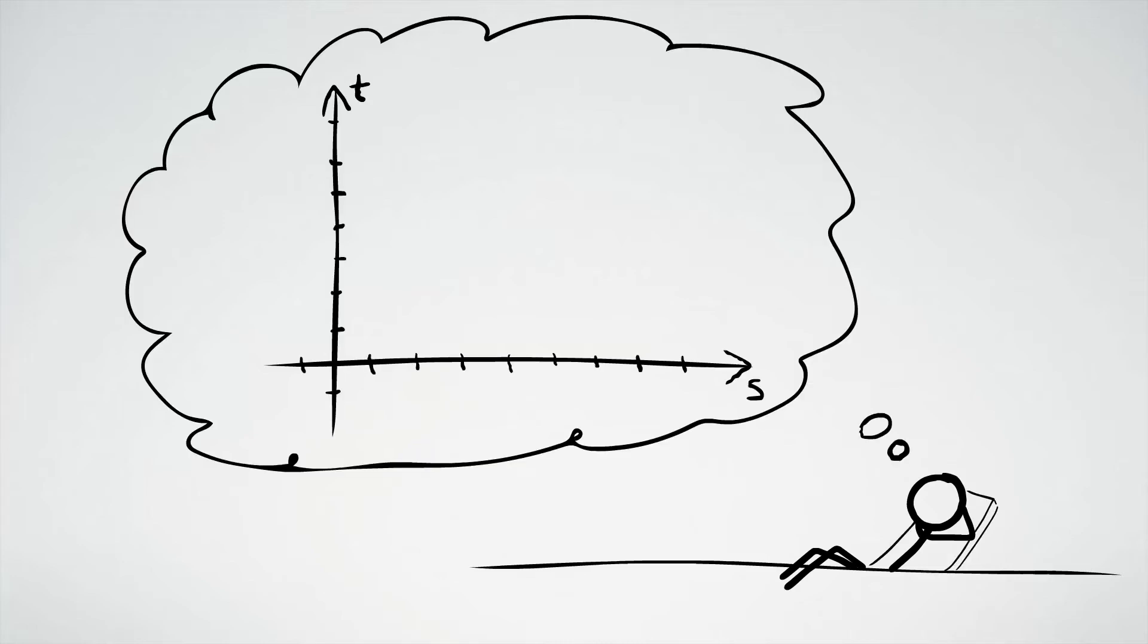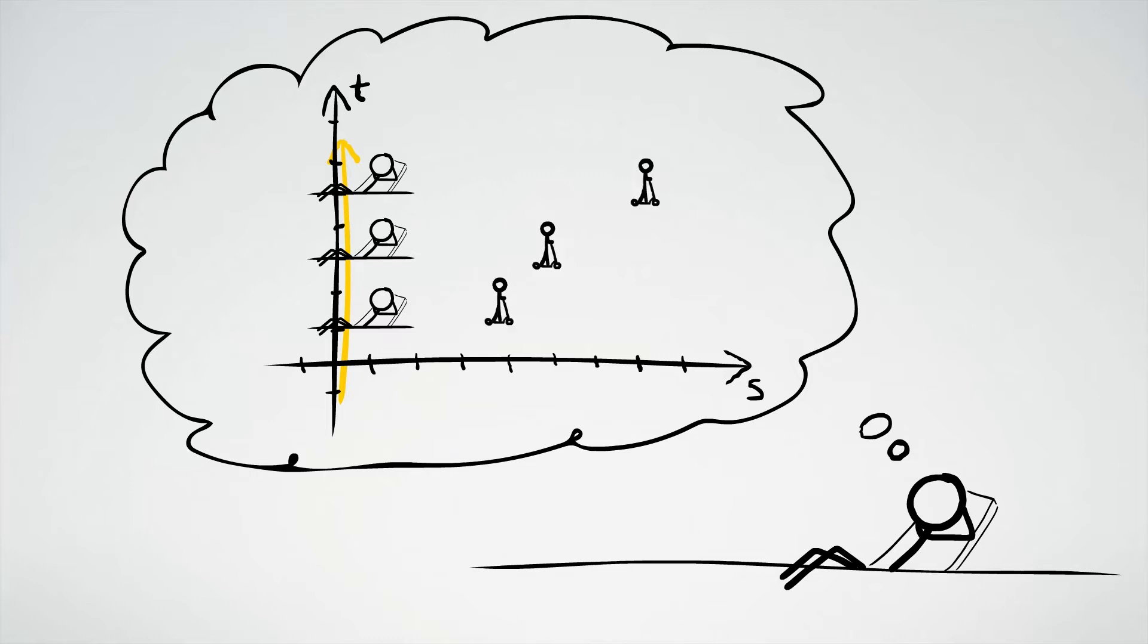When someone draws a space-time diagram from their own perspective, on that diagram they're always located at position x equals zero, since his position is not changing at all. In other words, if your world line leaves x equals zero and goes anywhere else, that means you're moving relative to the perspective of that particular space-time diagram, and thus it's not your perspective.